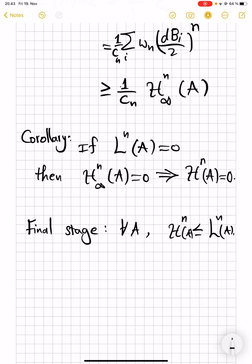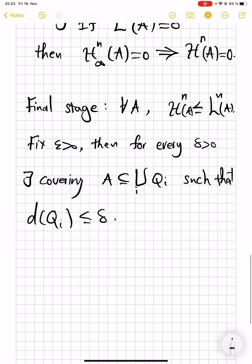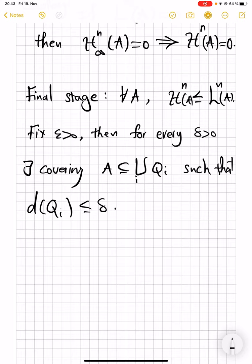So to show this, we fix epsilon positive, then for every delta positive, there exists a covering of A by cubes such that diameter of the cubes are less than or equal to delta. This is easy to do, because you can subdivide every cube into tinier cubes. You can divide into 1 million pieces. So definitely, you can make sure that the diameter of individual ones is less than delta.